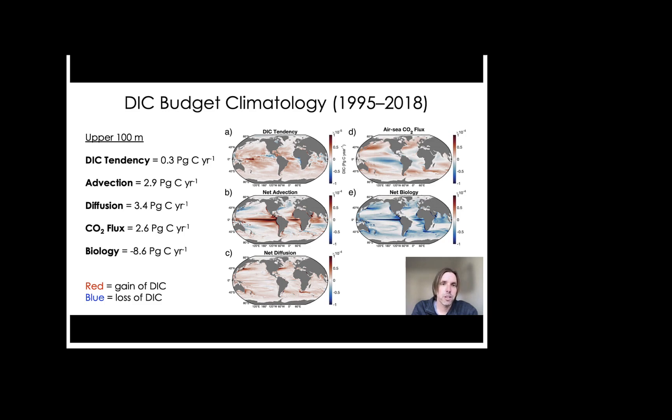For air-sea CO2 flux, shown in D, this causes a loss of DIC from outgassing in equatorial regions and also in select coastal zones, and a gain of DIC from CO2 uptake in subtropical and subpolar regions.